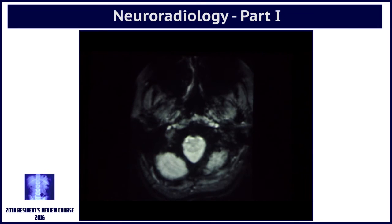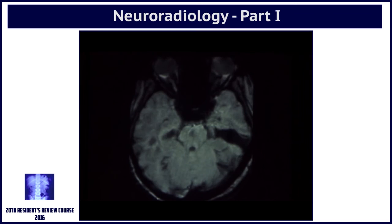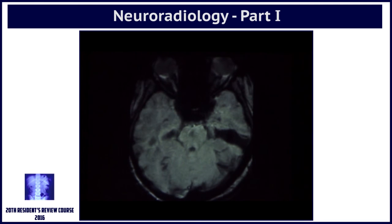After T1 and T2 weighted images, we obtain what is called gradient imaging or susceptibility weighted imaging. Susceptibility is an artifact — it is an artifactual loss of signal, or profound blackness, on an MR image due to diamagnetic, paramagnetic, or ferromagnetic substances.